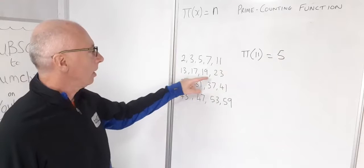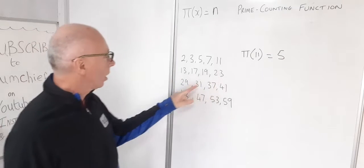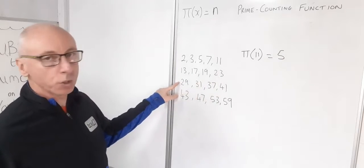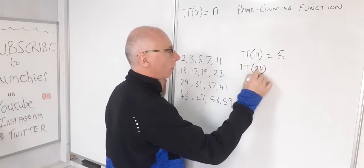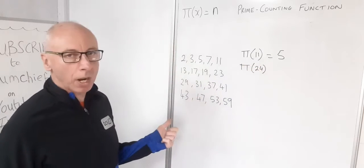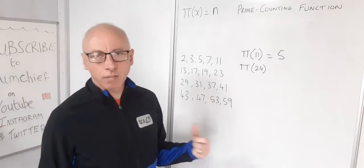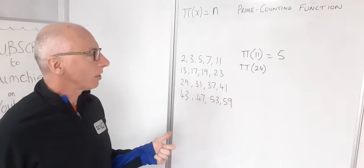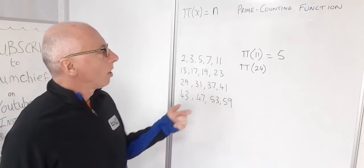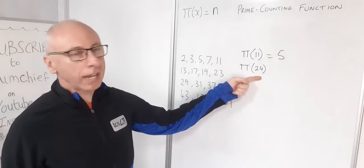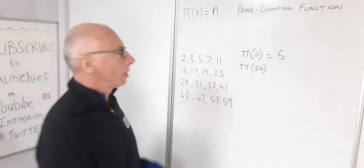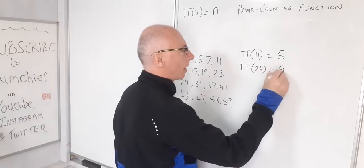If I did π(23), I could also do π of any number up to 29. For example, π(24) - 24 is not a prime number. 25, 26, 27, 28 would still give out the same answer. So I've got 9 prime numbers, so that's going to give me a 9.